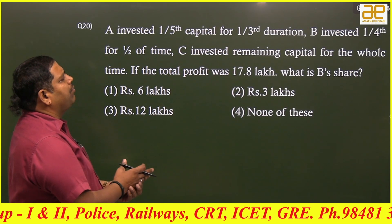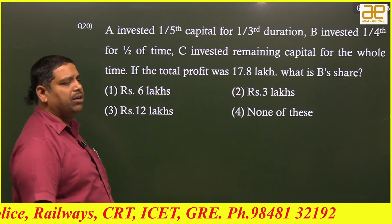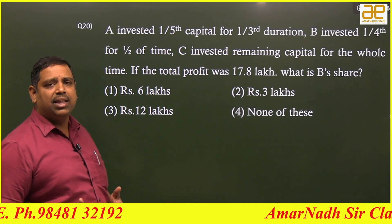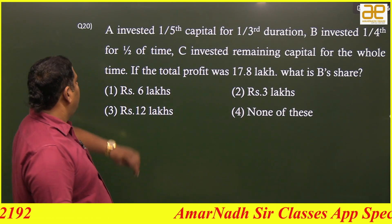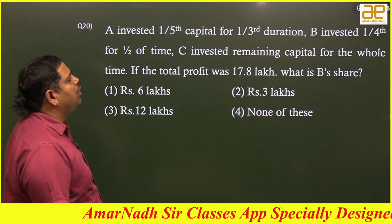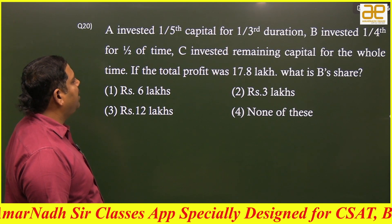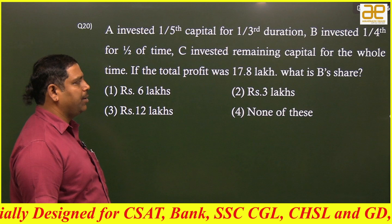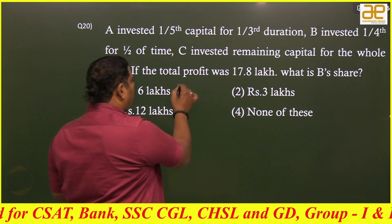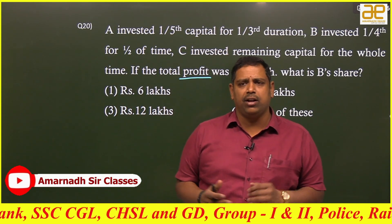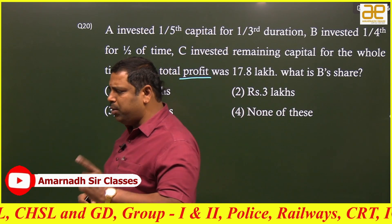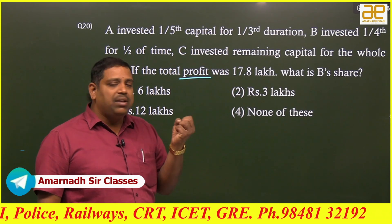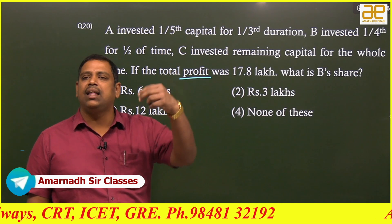This is the next important model. I will explain it in two different ways — whichever you feel comfortable with in the examination. Method 1 is the raw method, Method 2 is the processed method. A invested one-fifth of the capital for one-third of the duration. B invested one-fourth for half of the time. C invested the remaining capital for the whole time. If the total profit was 17.8 lakh, what is B's share? The problem is that direct investments and time periods are not given — instead, parts of investments and time periods are given.